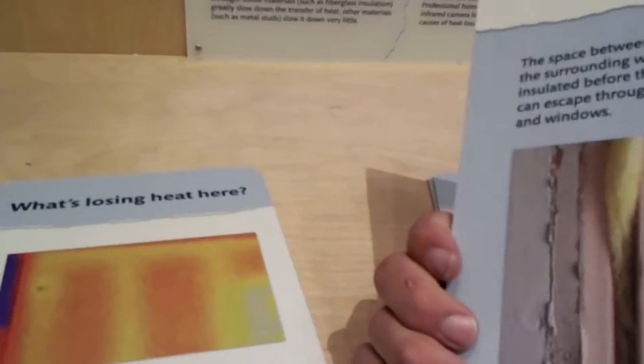What's losing heat here? This is around a door, door frame. If you don't insulate around the door frame, you're going to see a lot of energy loss right here.